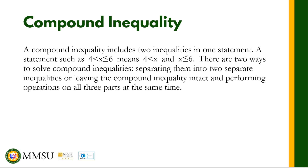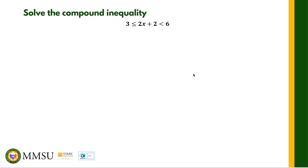We are going to illustrate these two methods in the following example. We have here the inequality: 3 is less than or equal to 2x plus 2, which is less than 6. The first method is by separating the two inequalities.